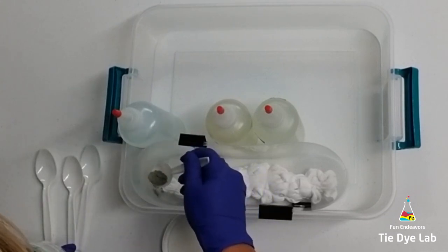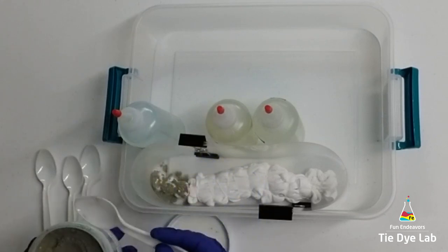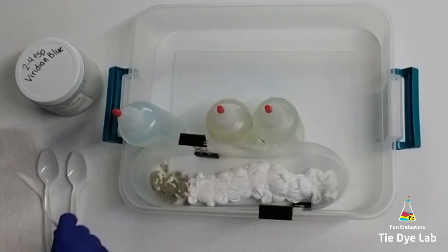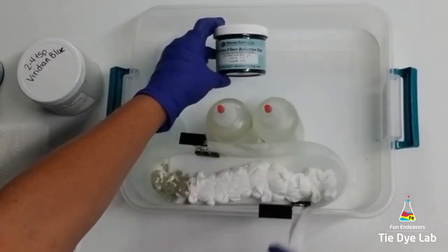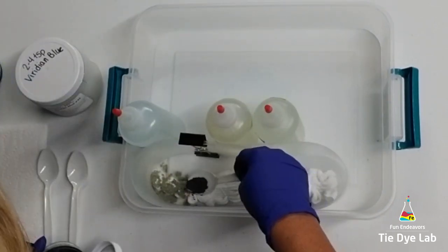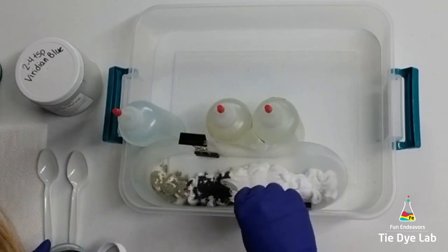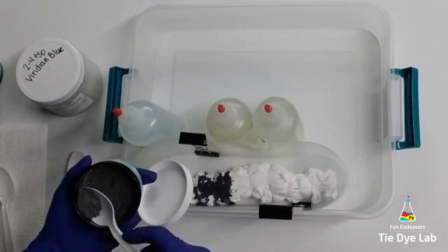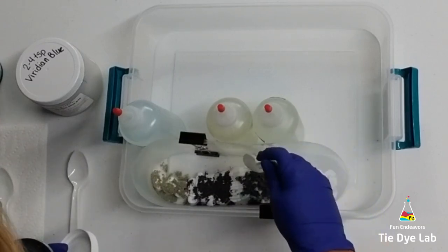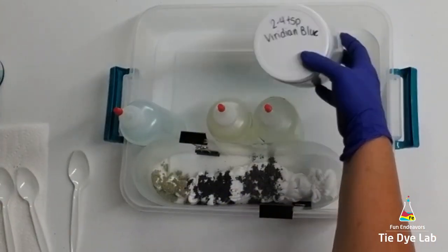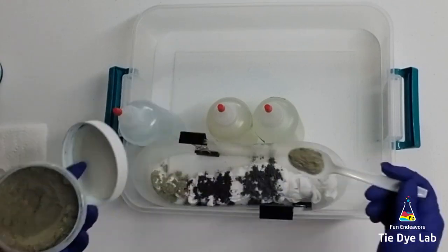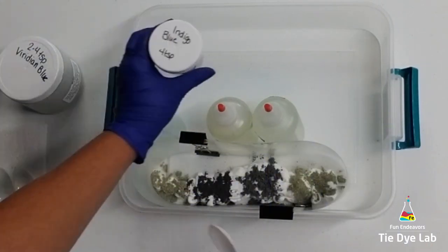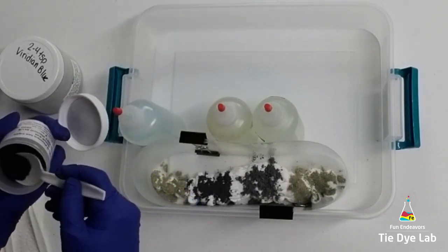Followed by Grecian Sea from Dharma Trading Company, Tropical Dream from Dharma Trading Company, and one more area of Viridian Blue from Grateful Dyes. Then in between each of these colors I'm going to add a line of Indigo Blue from Custom Colors.